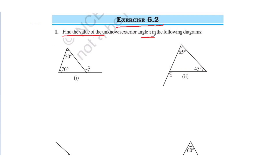We have to find out the exterior angle. The first diagram has two angles given: 50 degrees and 70 degrees. And we need to find the exterior angle of this triangle.